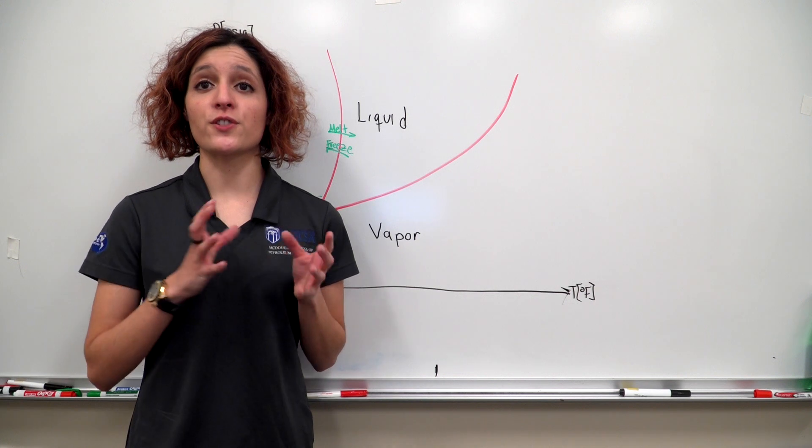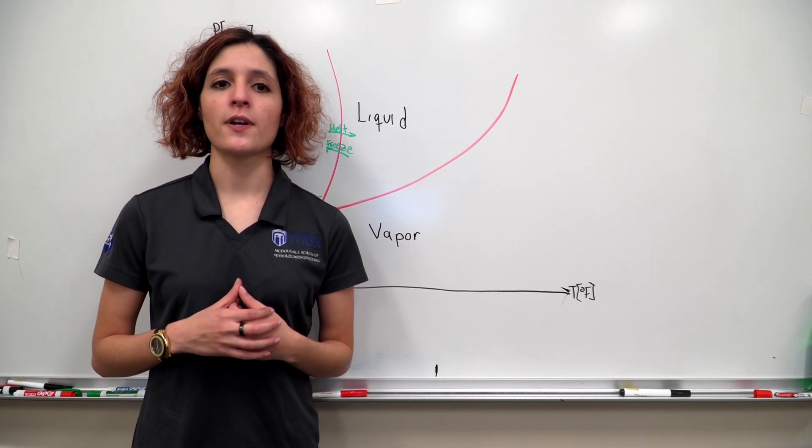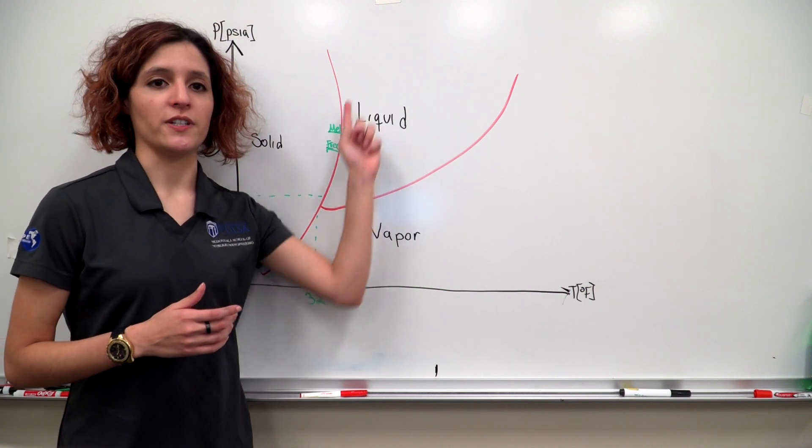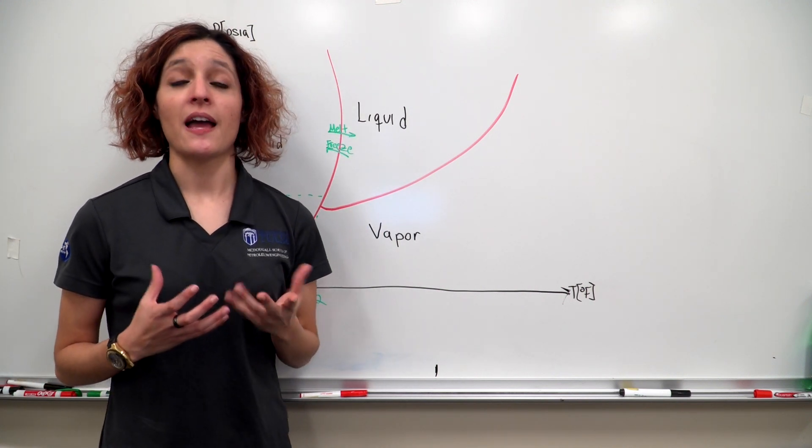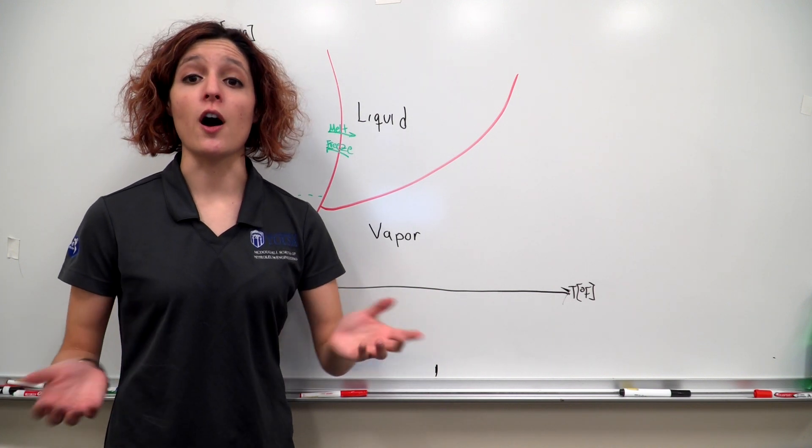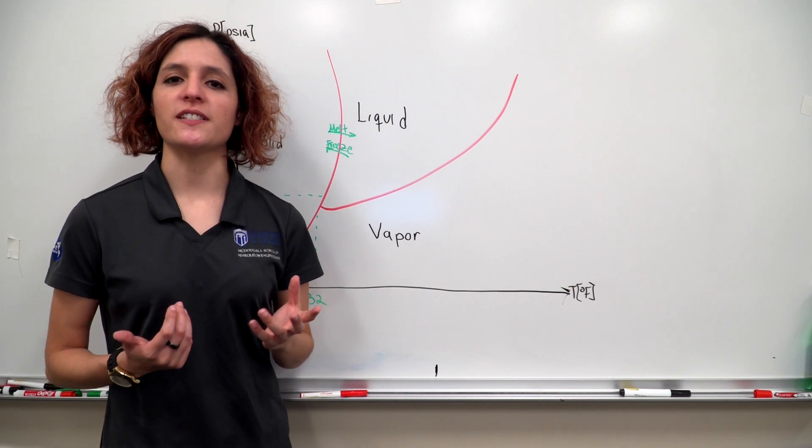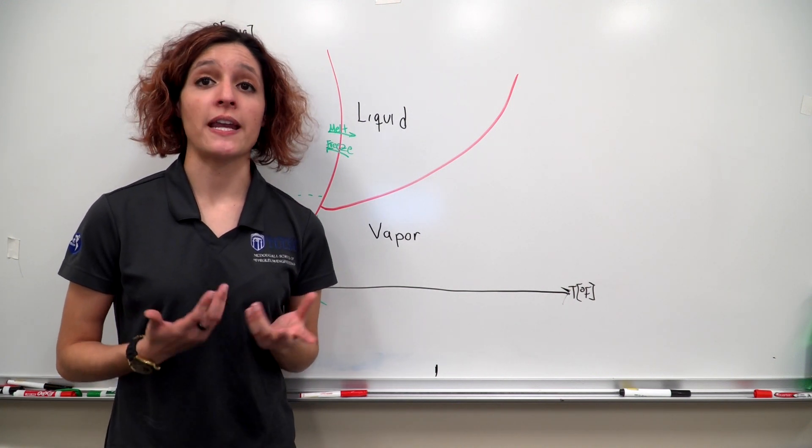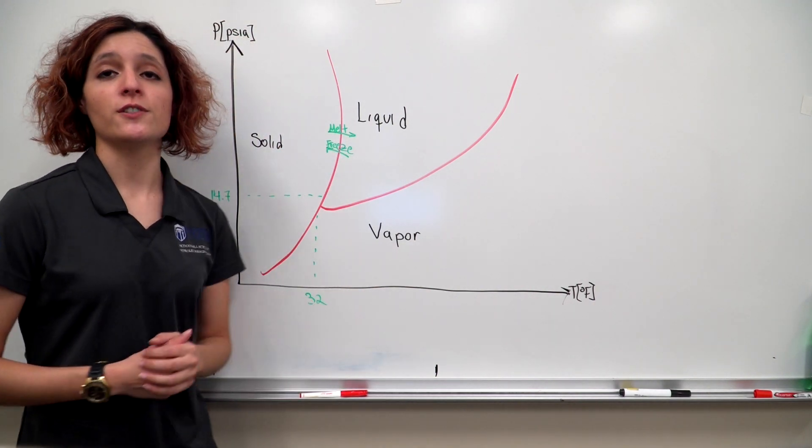Moving from a solid to a liquid will involve heating or cooling. Moving across this boundary from a solid to a liquid is melting, as ice would melt in your beverage on a hot day. Moving across from a liquid to a solid is freezing. In the case of water at atmospheric conditions, this happens at 32 degrees Fahrenheit.